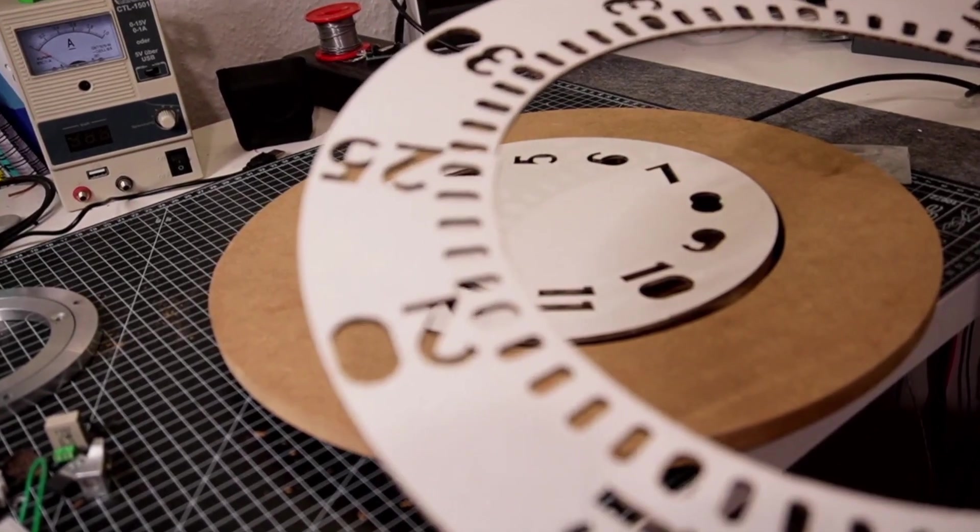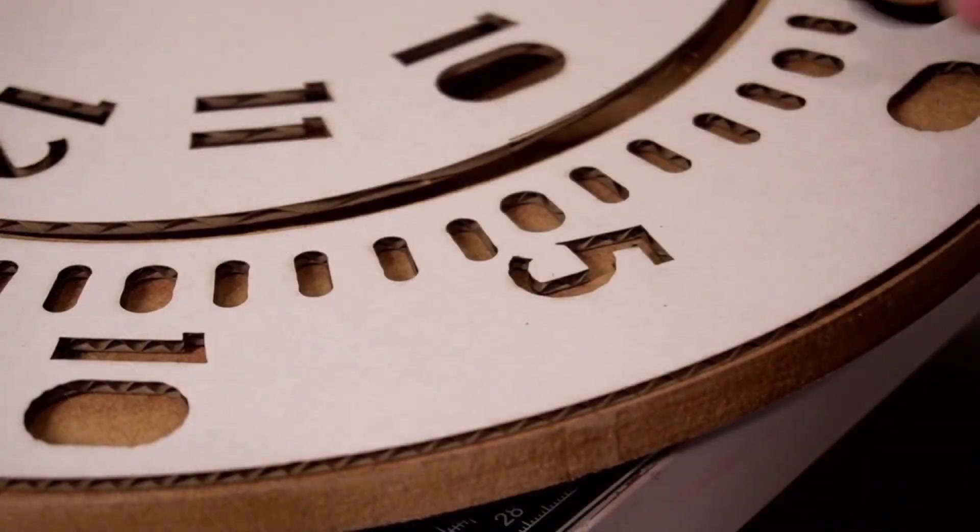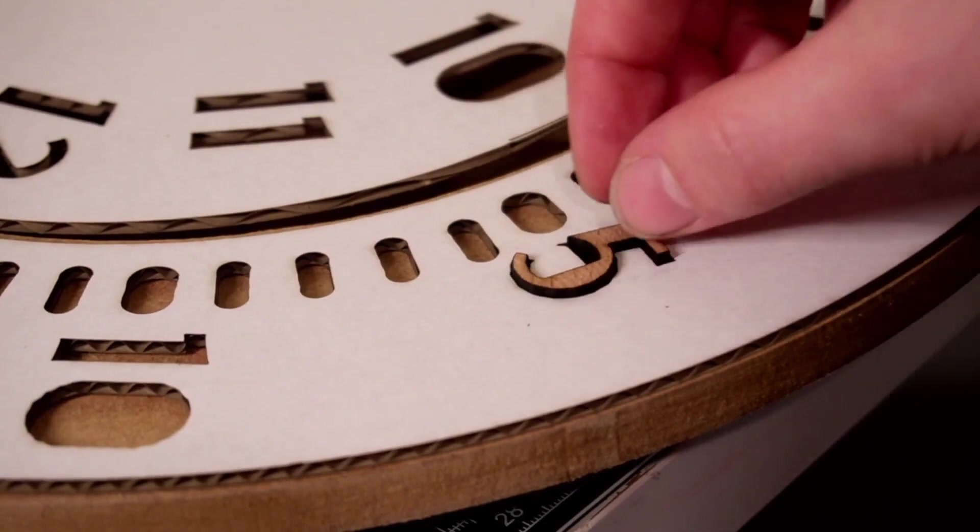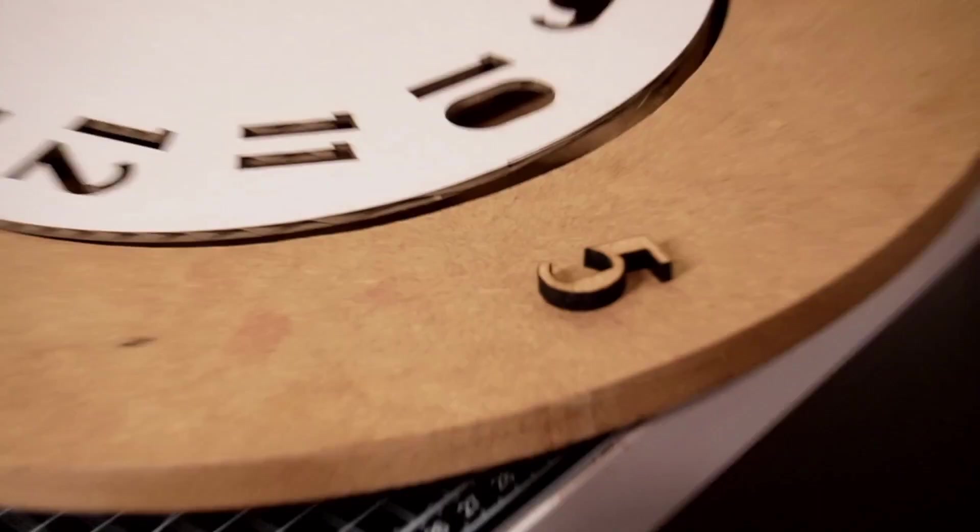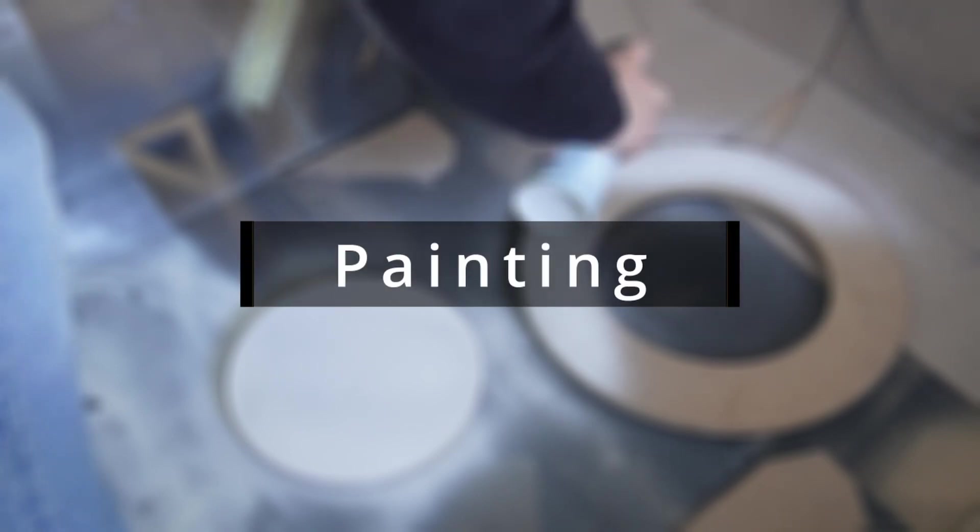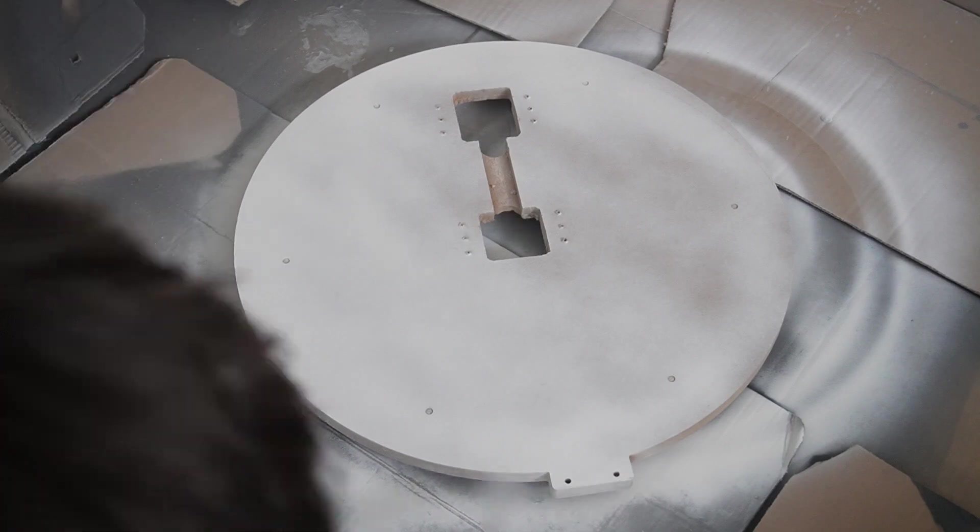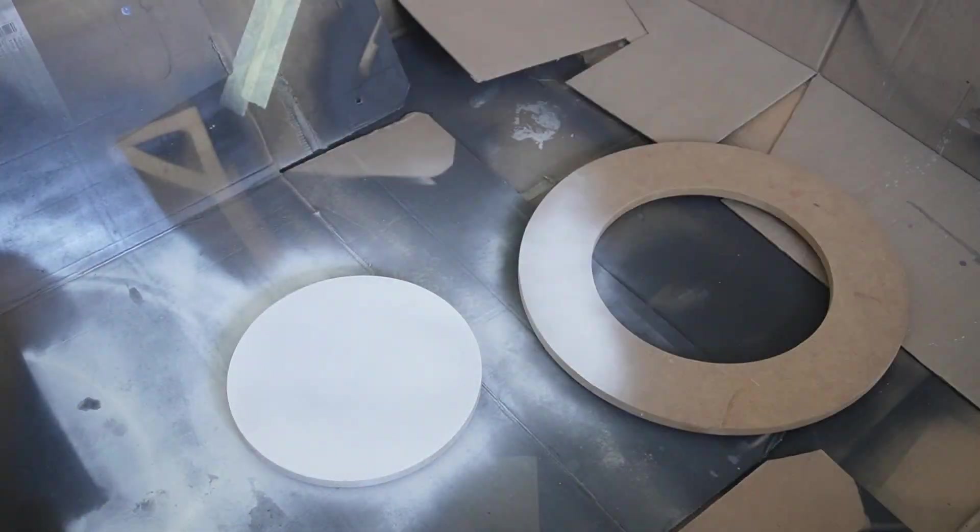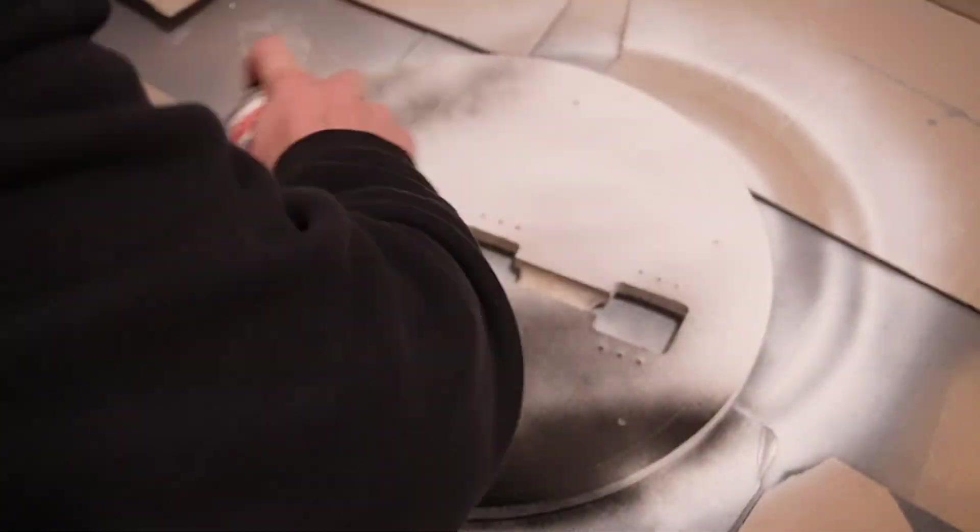I also cut out these paper templates so I can just place them on top of the watch, place the letters inside the template and they will be perfectly aligned. But first I have to paint the MDF and then I can glue the letters on. MDF soaks up spray paint like crazy so I primed it first and between layers I gave it a quick sanding for a smooth finish.